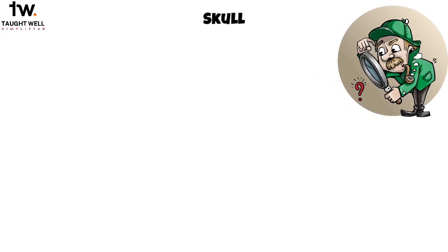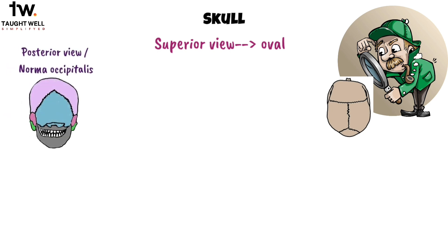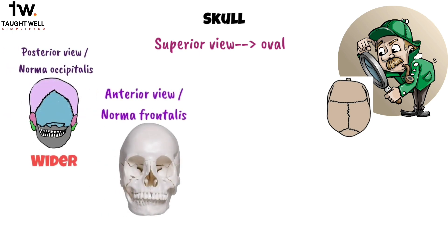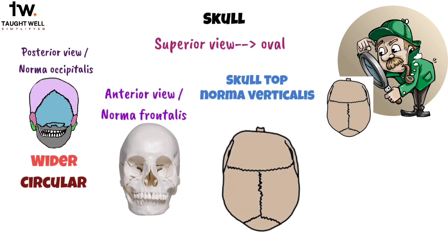When you look at the skull from above, you'll notice it usually has an oval shape. The back part, called posteriorly, is wider than the front, known as anteriorly, but sometimes it might even appear more circular. Now, let's take a peek at the skull from the top, also known as norma verticalis.